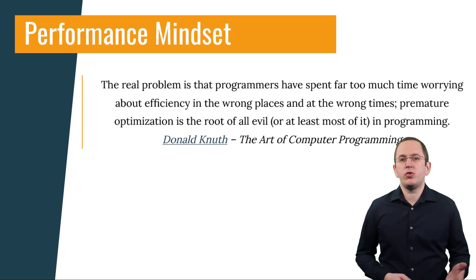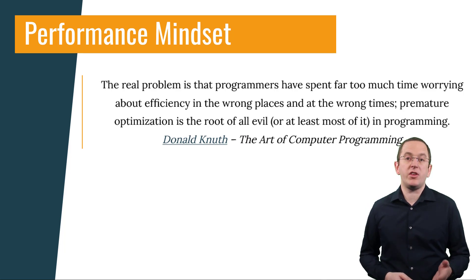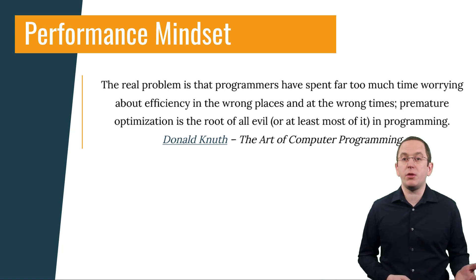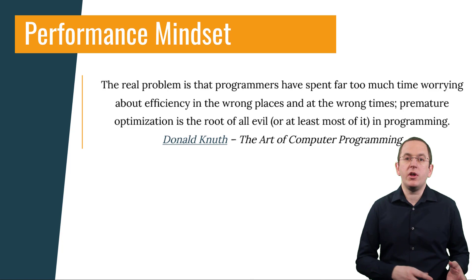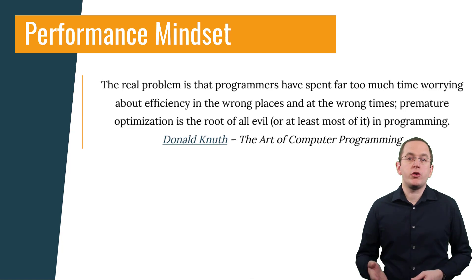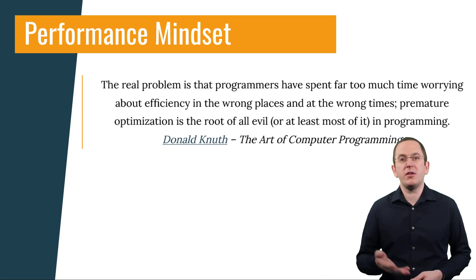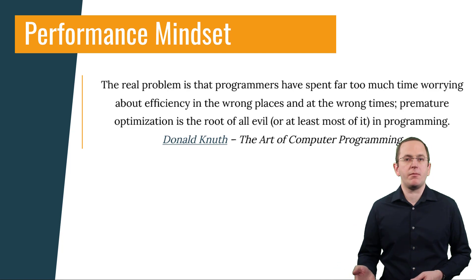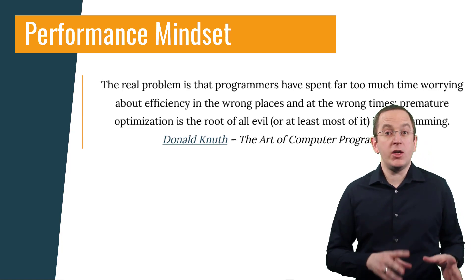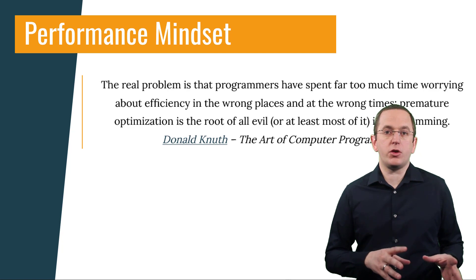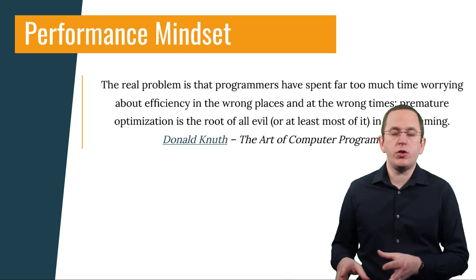As Donald Knuth wrote in his book The Art of Computer Programming, the real problem is that programmers have spent far too much time worrying about efficiency in the wrong places and at the wrong times. Premature optimization is the root of all evil, or at least most of it, in programming. To avoid that, you need to decide wisely which parts of your code you want to optimize and when to do it.